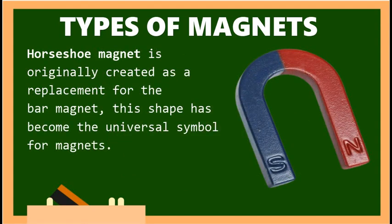Next we have the horseshoe magnet. A horseshoe magnet was originally created as a replacement for the bar magnet, and this shape has become the universal symbol for magnets.